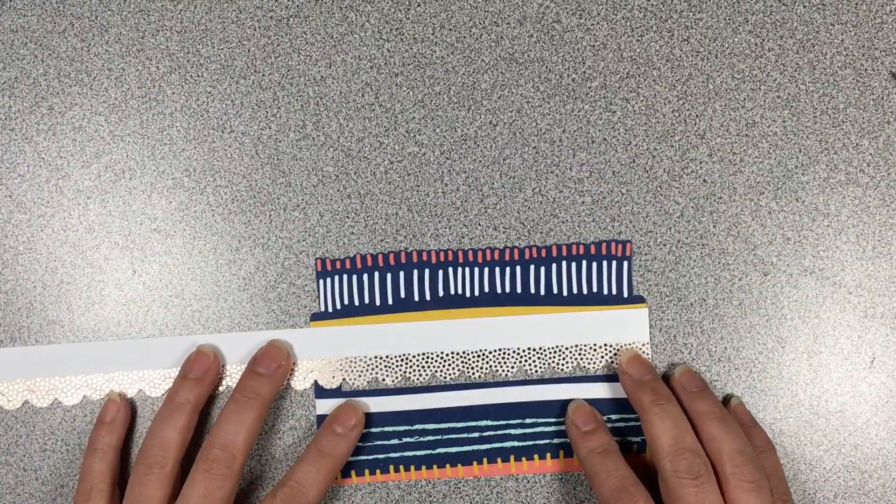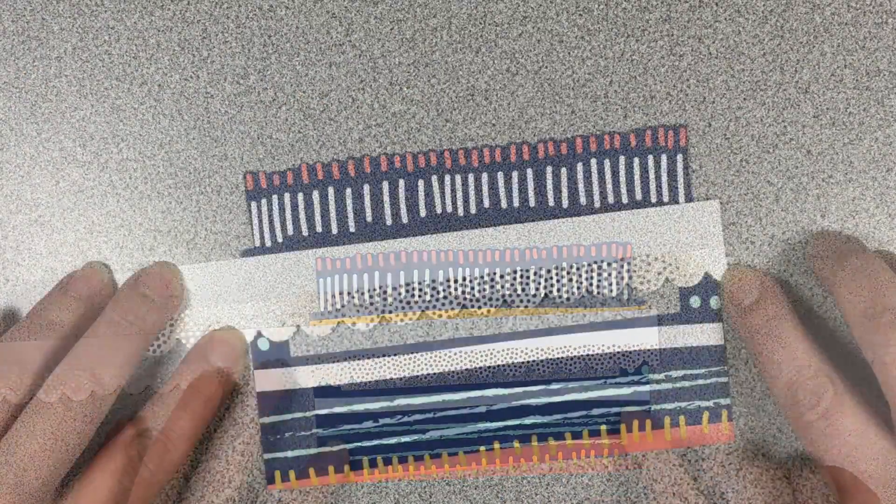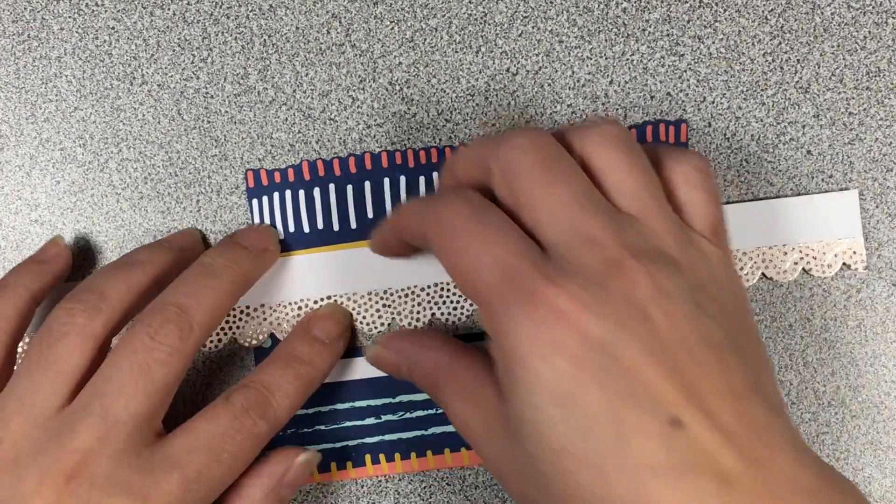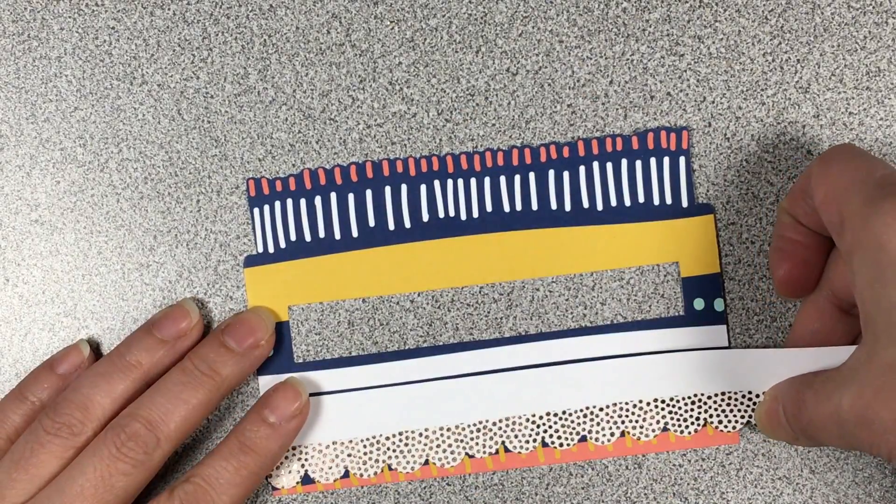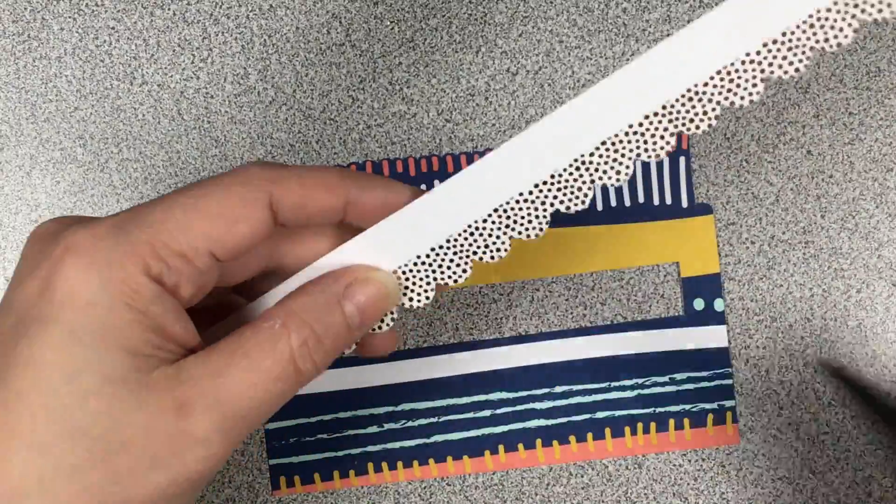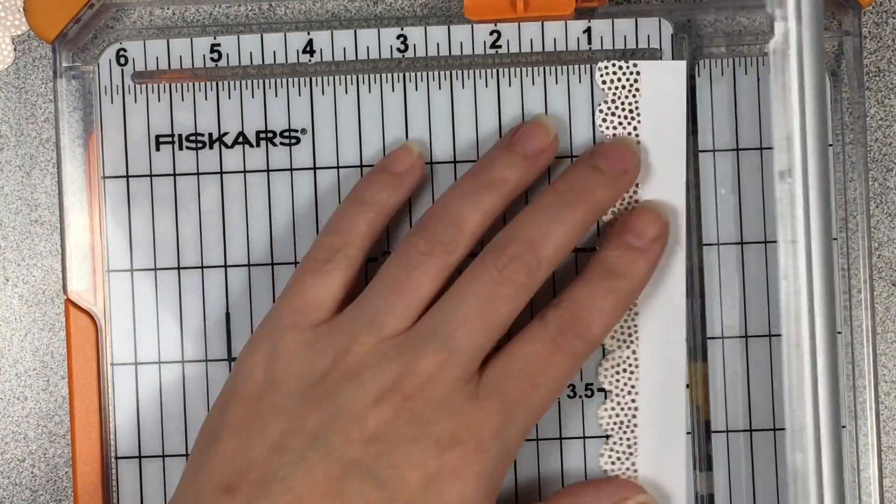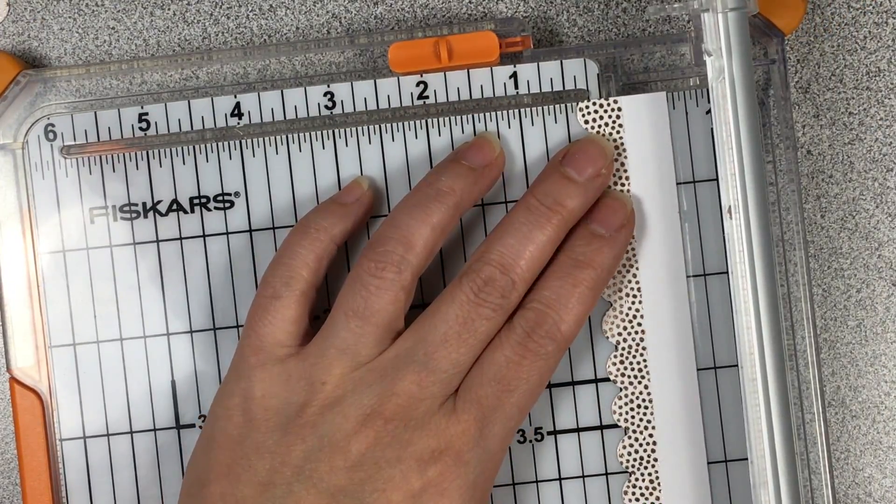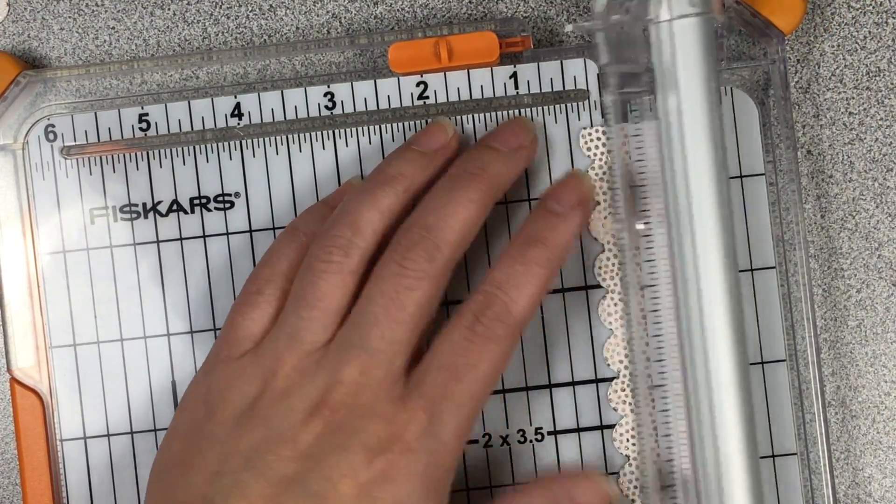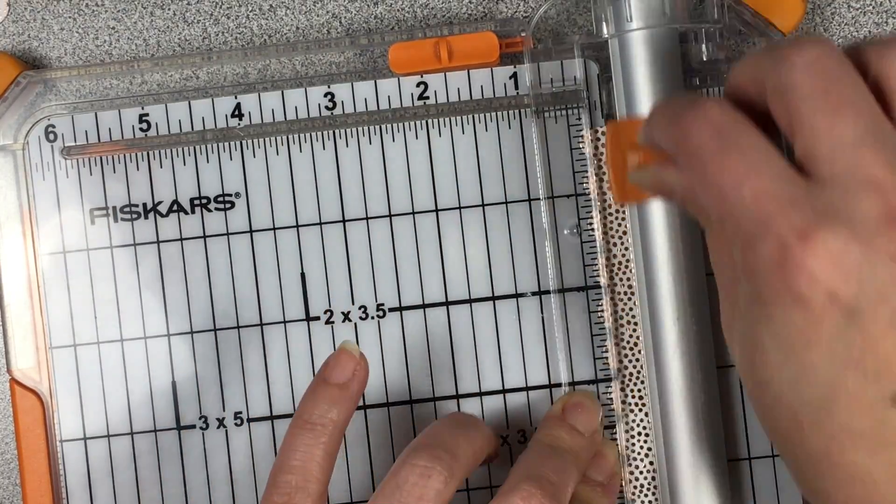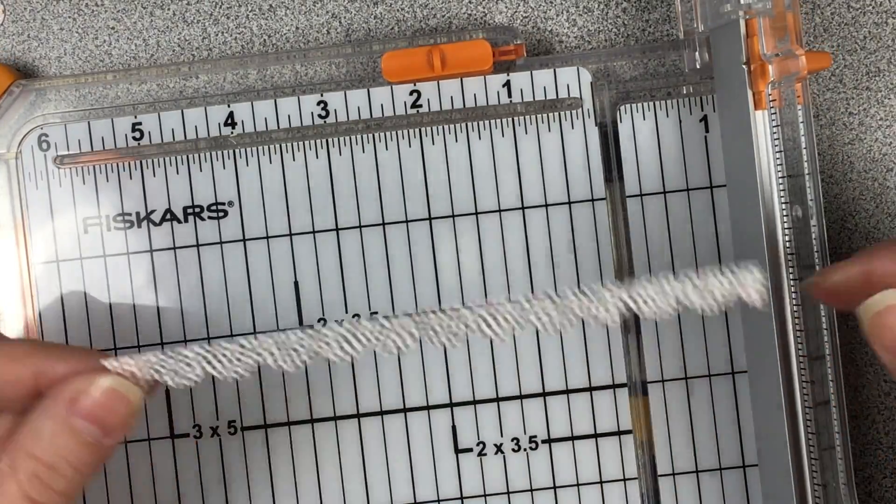Now we're just going to measure to make sure we have enough for the top and bottom of the cake, and also when we cut it down we want it to be even. Just double check and then we're going to remove that white excess cardstock so that we just have the washi tape.